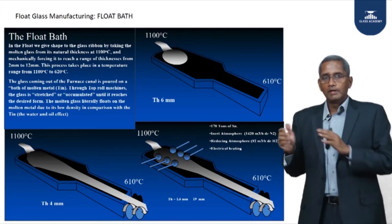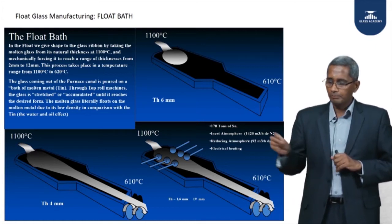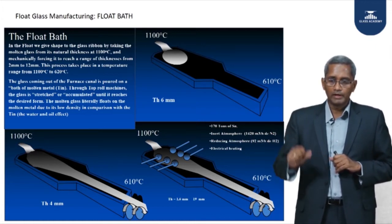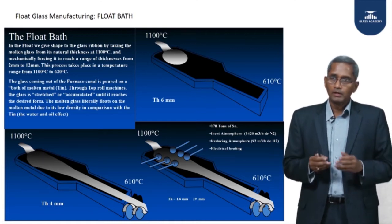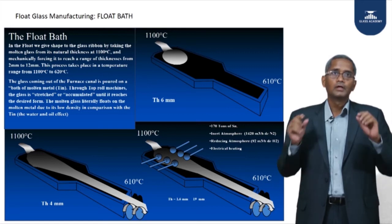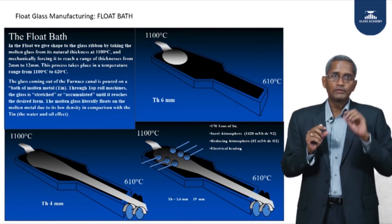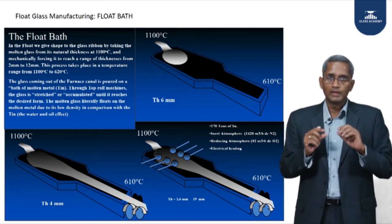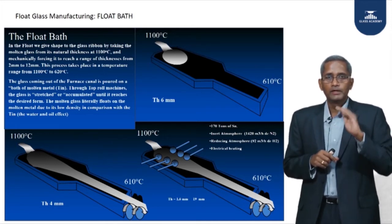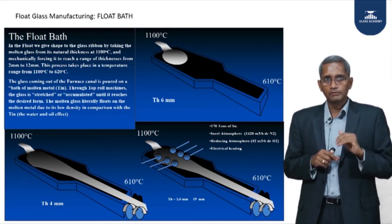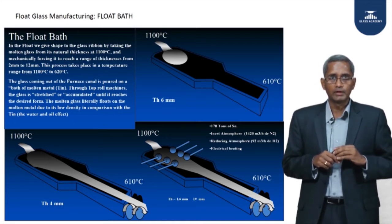To illustrate: if you pour cooking oil — 5ml in one place or 50ml in another — it spreads differently but because the viscosity is the same, it reaches the same final thickness on its own. Similarly, when glass is poured onto the molten tin, it forms an equilibrium thickness of 5.7 millimeters at 1100°C, determined by the viscosity of the glass.